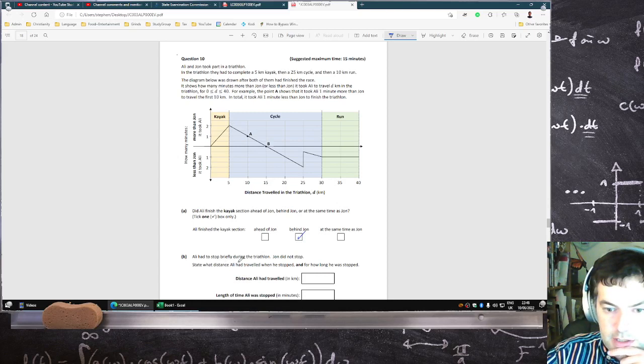Ali stopped briefly during the triathlon, John did not stop. State the distance Ali had traveled when he stopped and for how long. So it was here when he stopped, at the 25 mark, for one and a half minutes.